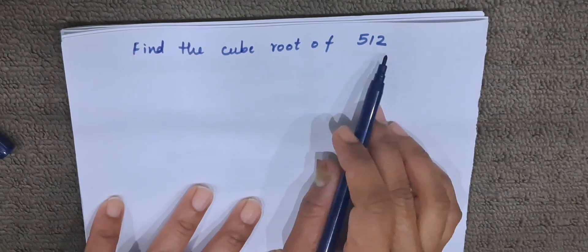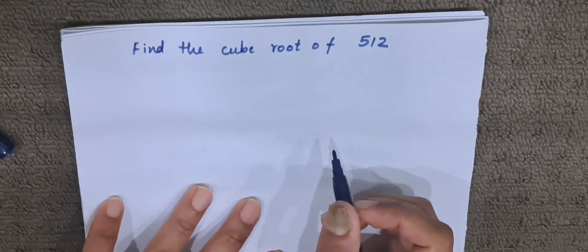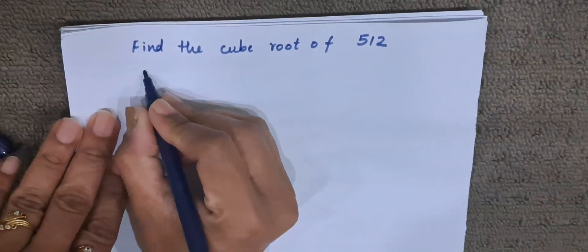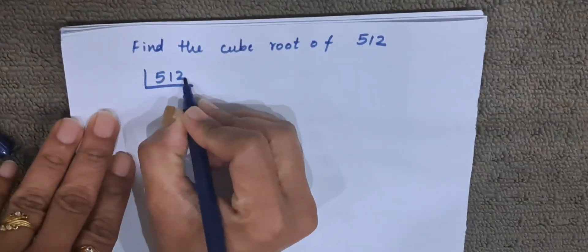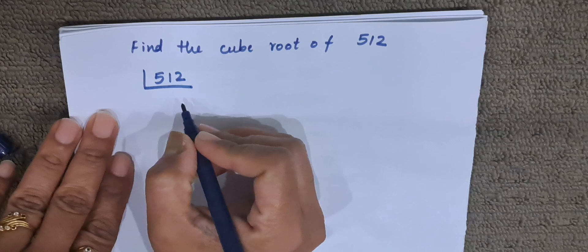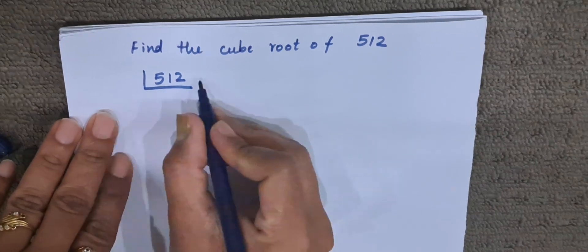We will be finding the cube root of 512 by prime factorization method. What we will do, we will go on finding the factors of 512, that is prime factors of 512.